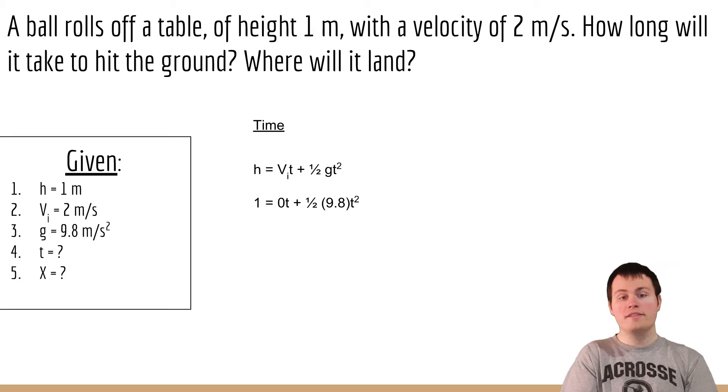So we have one is equal to one half nine point eight t squared. We solve for t and we find that t is equal to point four five seconds.